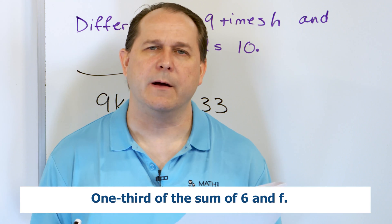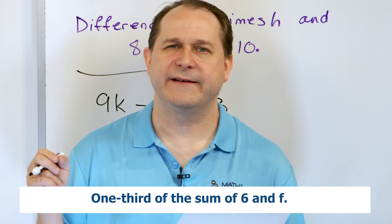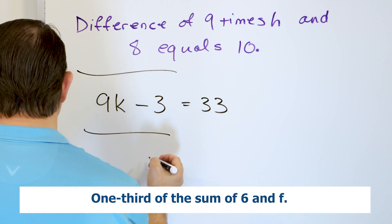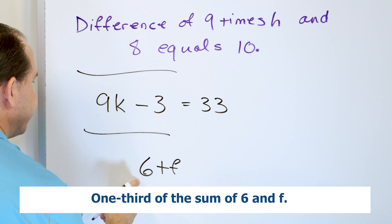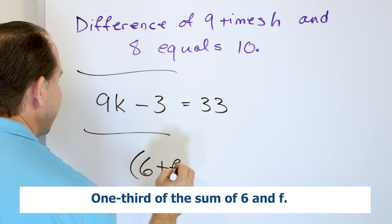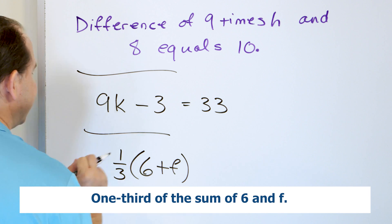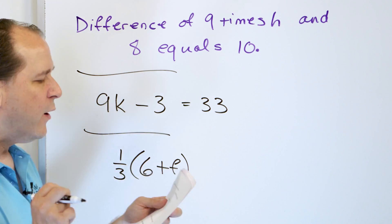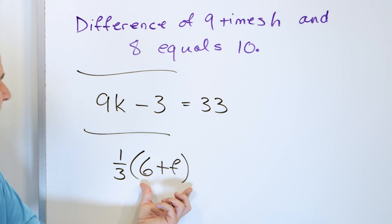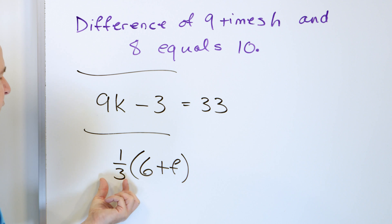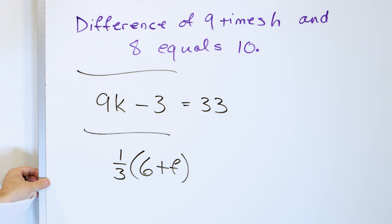One third of the sum of six and F. We first take the sum of six and F, then take one third of it, so we compute the sum first. One third of something means one third times something, so the one third goes in front: (1/3)(6 + F). We wrap the sum in parentheses because that addition must happen first, and then we multiply by one third.